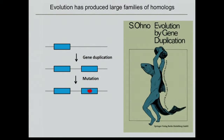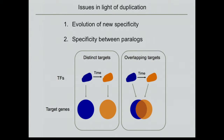Evolution has provided us with these large families of homologues. Particularly in eukaryotic genomes, we're left with this issue of how do we understand specificity in the light of large families of very often similar transcription factors. This issue of homologues and similar binding specificity really raises two interrelated issues, and I'm going to talk about both of those today.